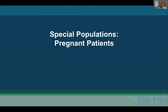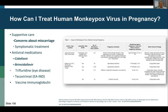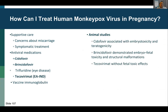The last special population is pregnant patients. We cannot say that overall everyone does well, as in the limited cases reported, there is concern for both a high rate of miscarriage and the risk of vertical transmission. We have limited treatment options — cidofovir is associated with embryo toxicity and teratogenicity in animal models, while brincidofovir demonstrated structural malformations. Tecovirumat appeared safe in animal models and is the recommended treatment for pregnant women during this outbreak, but we have no human efficacy or safety data in pregnant women.